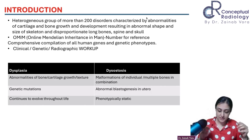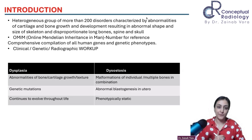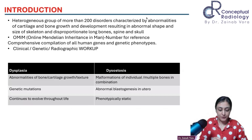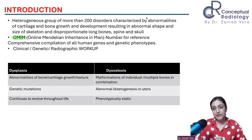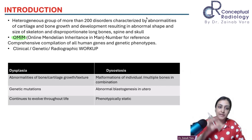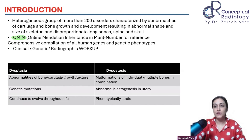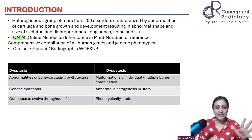There are around 200 disorders with cartilage, bone growth, and development issues. We need to know whether it's affecting the axial or appendicular skeleton. For further reading on any disease, always refer to OMIM — the Online Mendelian Inheritance in Man — which is a compilation of all disorders with exact pathophysiology and genetic workup.